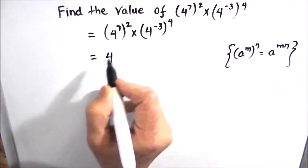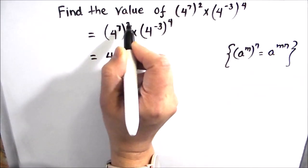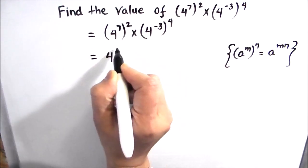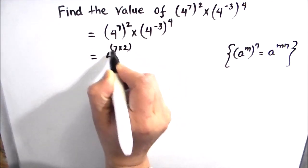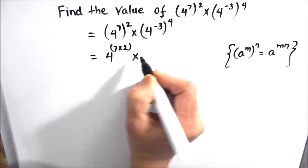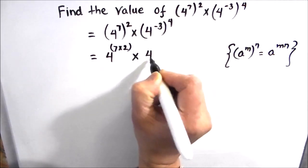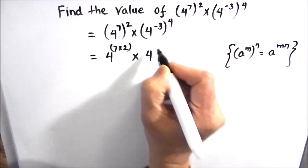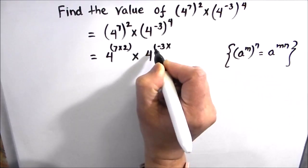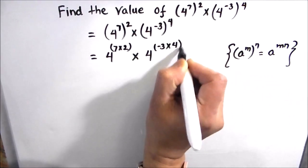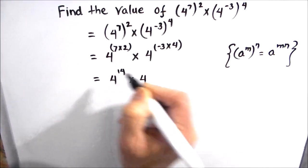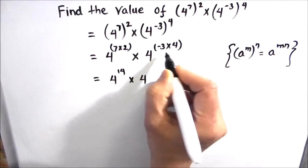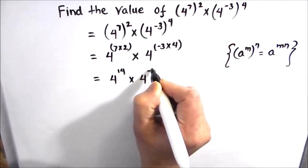In this question we have (4^7)^2, so that's going to be 4^(7×2). Here too, the same law will be applied, so this is going to be 4^(-3×4), which equals 4^14 × 4^-12. 7 times 2 is 14, and 3 times 4 is 12, negative 12.